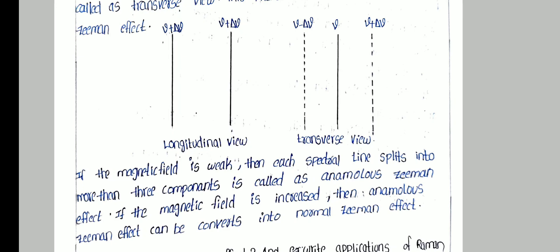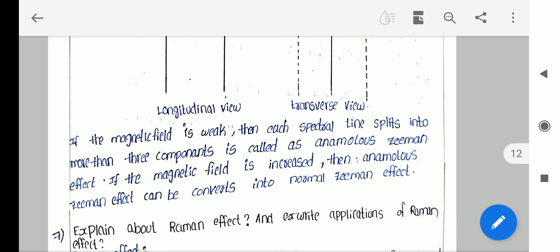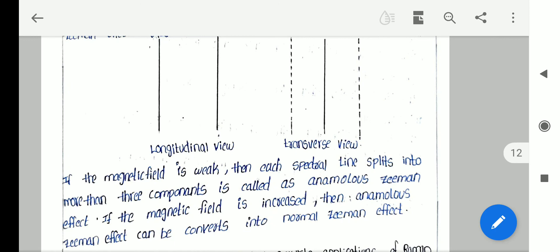If the magnetic field is increased, then the anomalous Zeeman effect converts to the normal Zeeman effect. So in summary: the Zeeman effect is the splitting of spectral lines in the presence of a magnetic field. When the field is weak, it is the anomalous Zeeman effect; when strong, it is the normal Zeeman effect, and anomalous converts to normal.